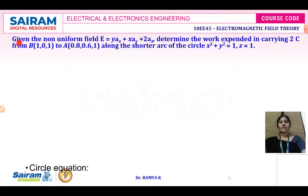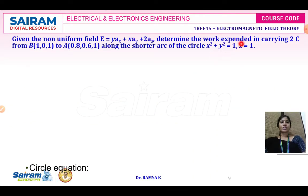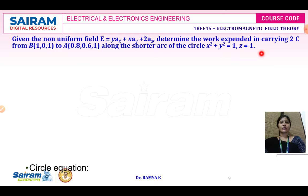First we will see one problem. Given a non-uniform field E = yAx + xAy + 2Az, where Ax, Ay, Az are the unit vectors in the direction of X, Y and Z. Determine the work expended in carrying 2 coulombs of charge from point B (1, 0, 1) to point A (0.8, 0.6, 1), along the shorter arc of the circle X² + Y² = 1 and Z = 1.